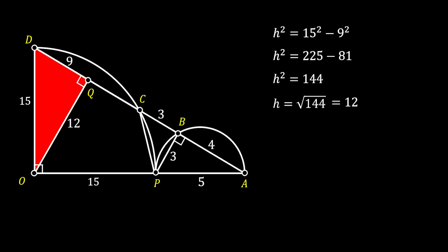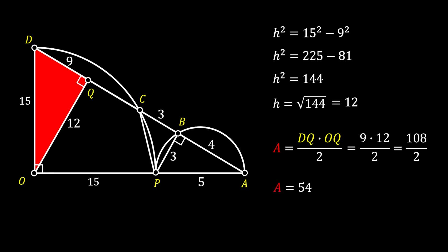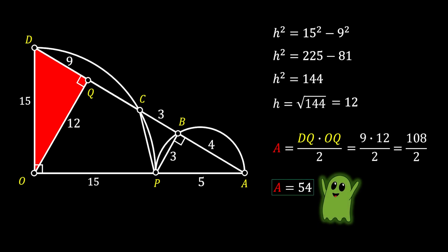Now it's easy to find the area of this red right triangle. The area of a right triangle equals half the product of its legs, so in our case that is DQ times OQ over 2. Substituting our values, that gives us 108 over 2, which means the area of our red right triangle is equal to 54 square units — and this is our solution.